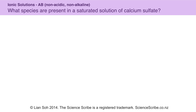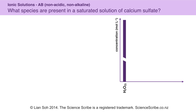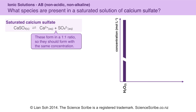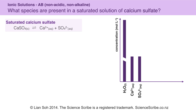My strategy for drawing any speciation graph is to start with my axes, and there will always be water present since these are aqueous solutions. To make a solution of calcium sulphate, I first need to start with solid calcium sulphate and dissolve that in water. When that happens, I end up making one calcium 2+ ion and one sulphate 2− ion — they form in a 1 to 1 ratio, so they also have the same concentration.